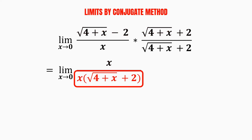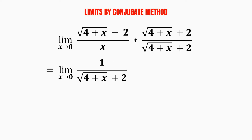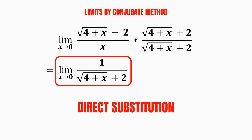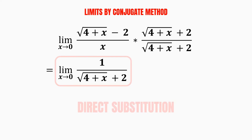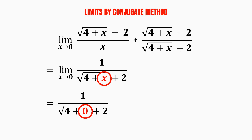In the denominator, bear in mind that we don't have to expand the brackets, as we have a common factor in both numerator and denominator, which is x, and we can cancel it out. At this point, we can now solve this limit simply by using direct substitution. Since x approaches 0, we plug the value 0 into the variable x, and by evaluating this expression, we get our final answer as 1 over 4.